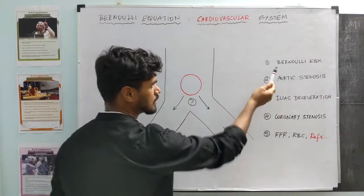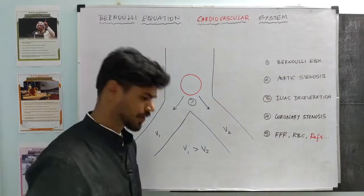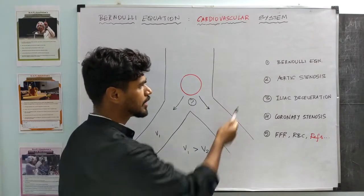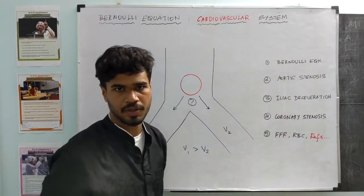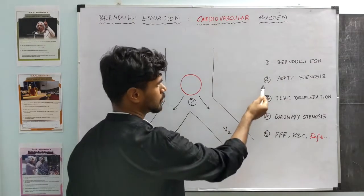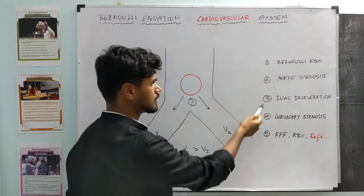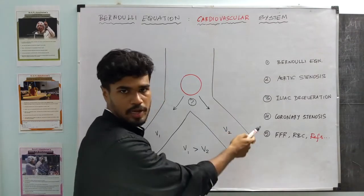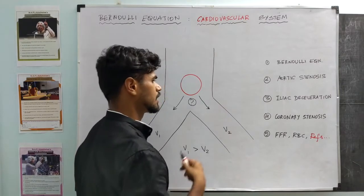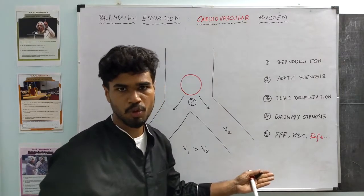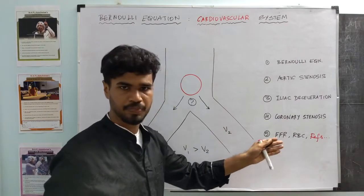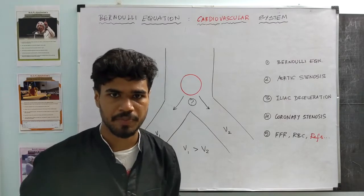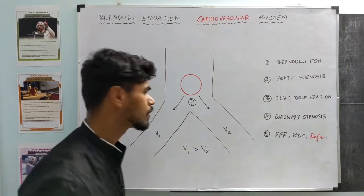I will answer that question using a very simple model by the end of this video. The model that I am going to use is known as the Bernoulli equation. The objective of this video is to discuss this particular Bernoulli equation and apply it to three specific cardiovascular problems. Specifically, I will talk about aortic stenosis, then deceleration at iliac bifurcation, and then pressure flow calculations at a coronary stenosis. Towards the end, I will discuss some open problems, answer this question, and give the references that were used to make this video. With that, I will get started with the Bernoulli equation.